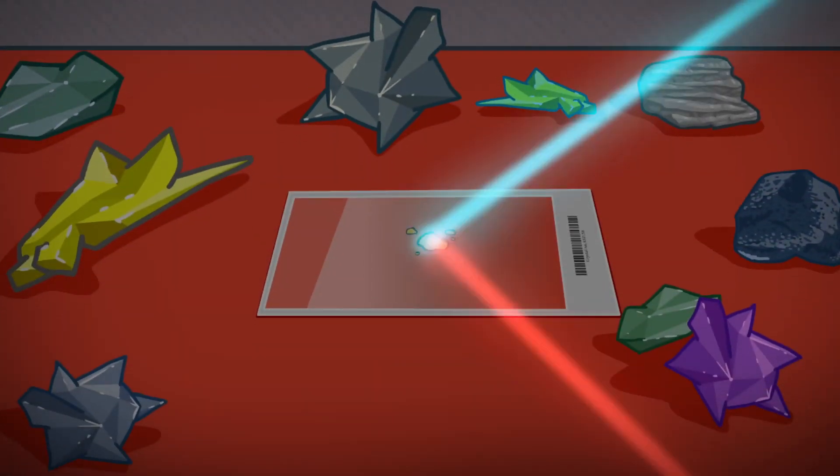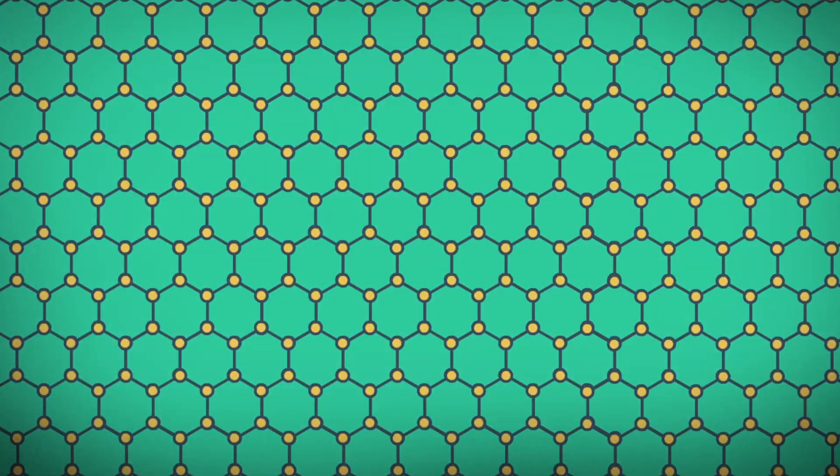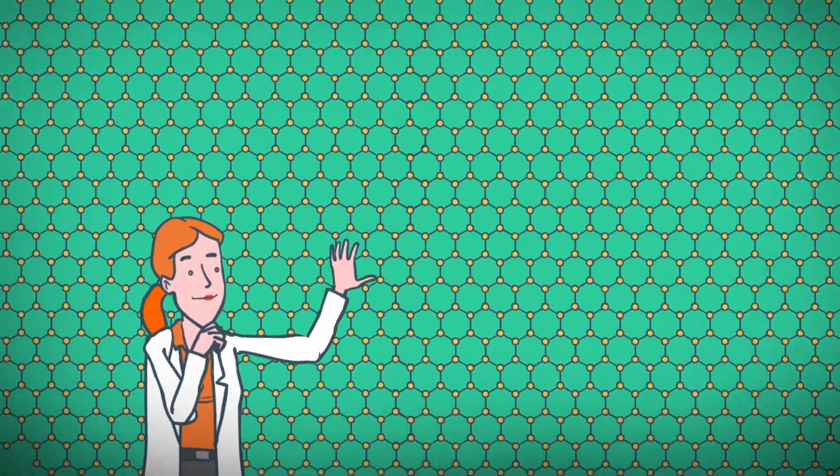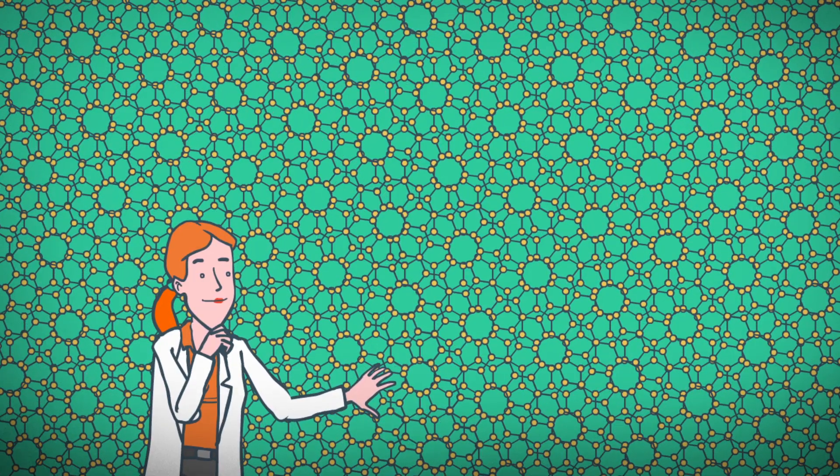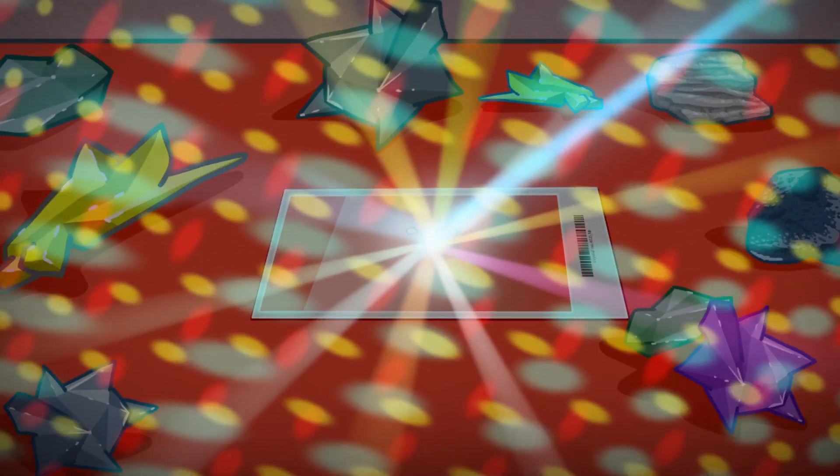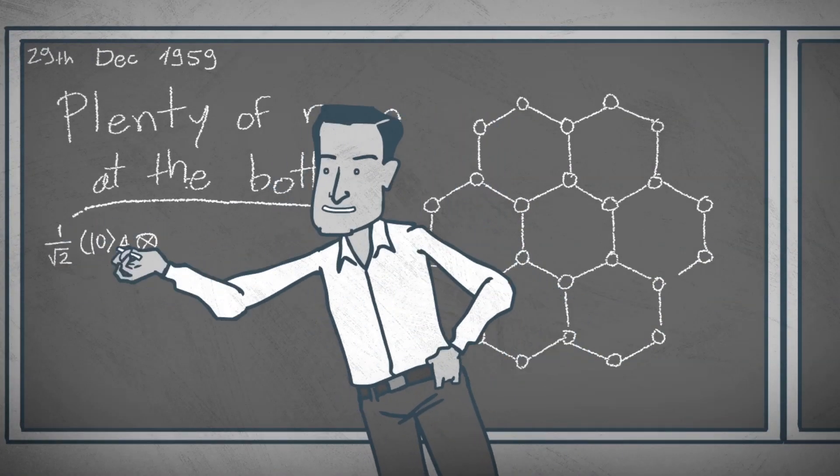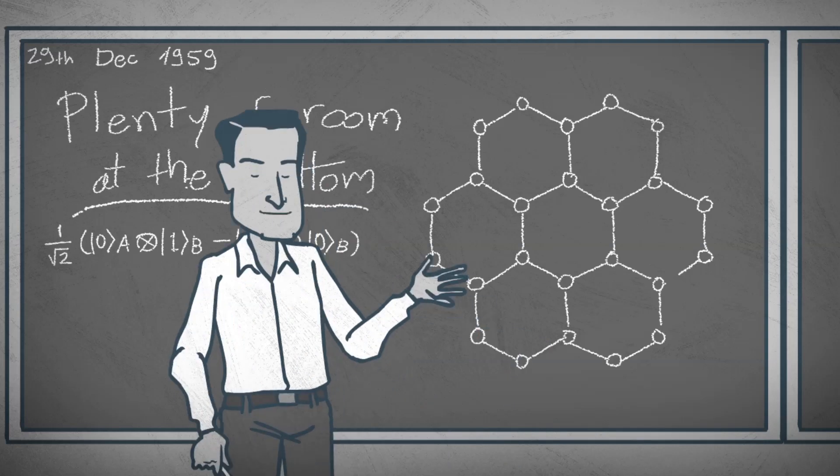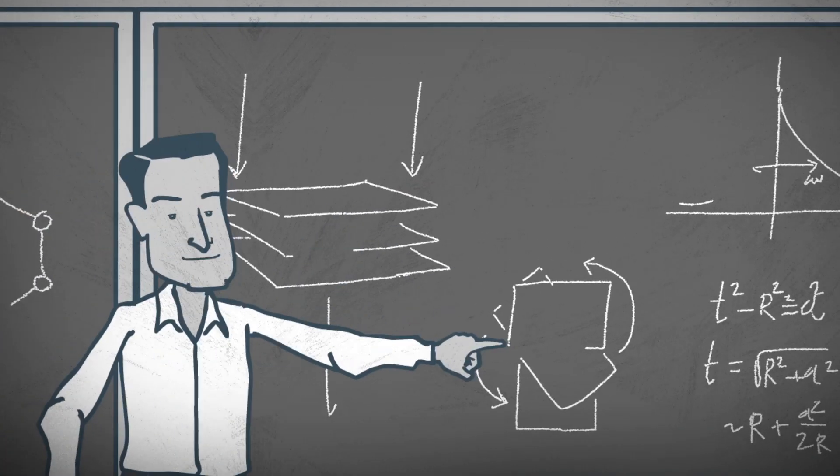What would the properties of materials be if we could arrange the atoms in a crystal the way we want them? This question was first asked by a curious physicist named Richard Feynman in a lecture full of profound ideas about manipulating and controlling things on the atomic scale.